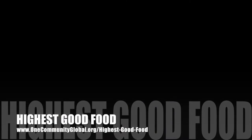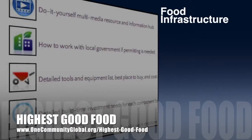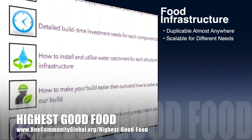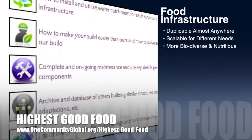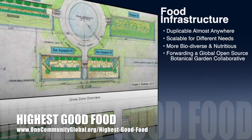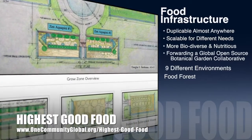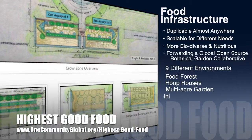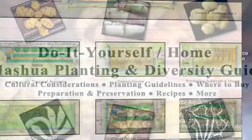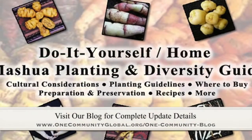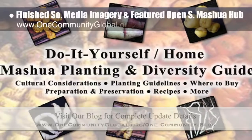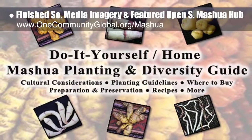OneCommunity's approach to highest good food is duplicable almost anywhere, scalable for different needs, more biodiverse and nutritious, part of forwarding a global open source botanical garden collaborative, and includes nine different free shared and duplicable growing environments. This week the core team working on highest good food finished the social media imagery and featured our open source Mashua Hub.